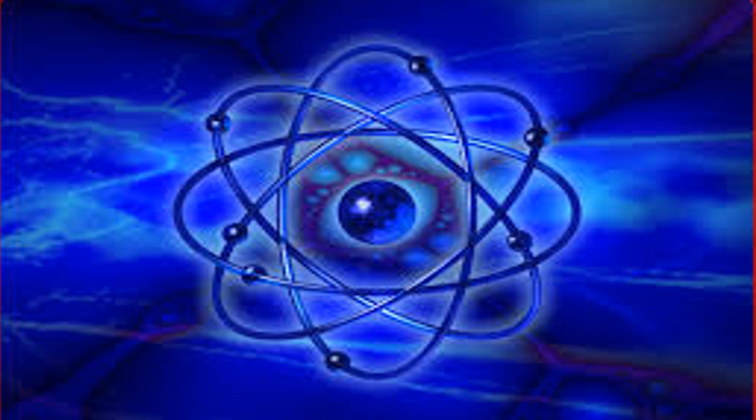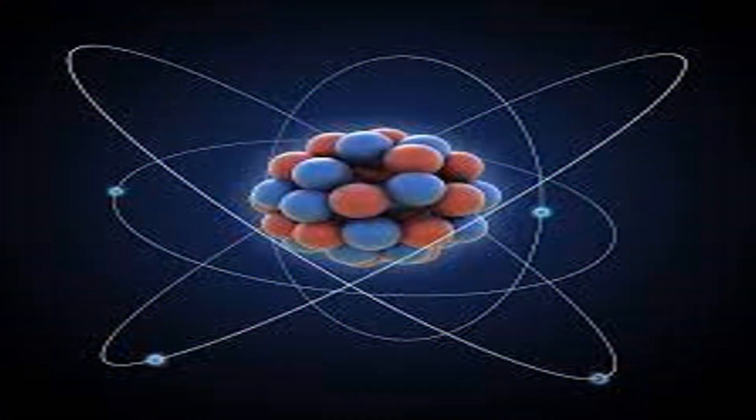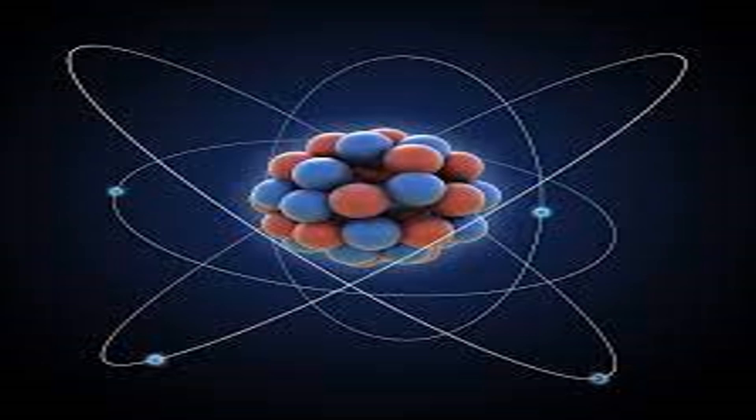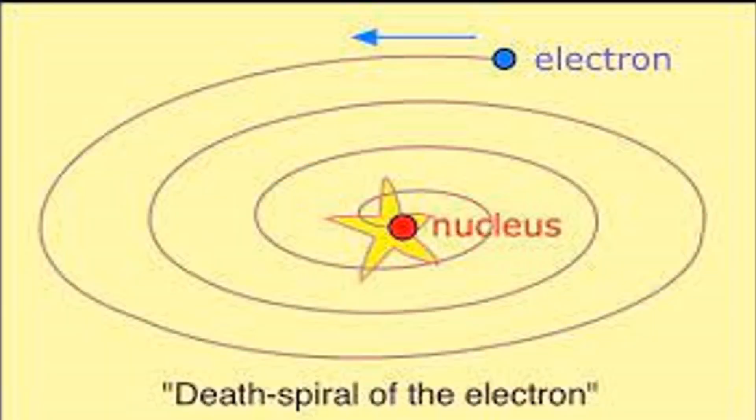The problem with this model, according to scientists at the time, was that according to Maxwell's theory, accelerated charges emit EM waves, which carry away momentum from the charged particle and hence energy. And so the electrons could not stay in the orbit as they are accelerating.